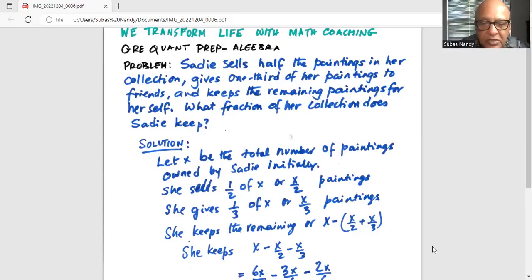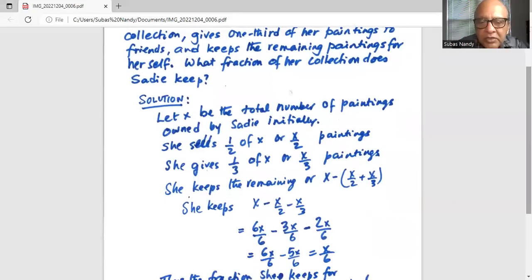So Sadie keeps X minus X over 2 minus X over 3. You notice the common denominator between 2 and 3 is 6, so 6 being the common denominator.